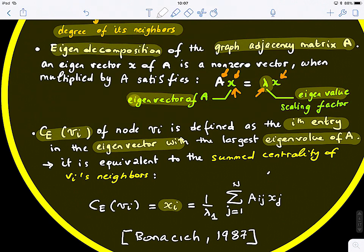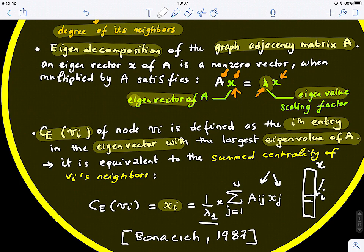In our decomposition, we get eigenvector x and take the i-th value, then multiply by the inverse of lambda one — the highest eigenvalue. This value found in the eigenvector is the eigencentrality of node vi.